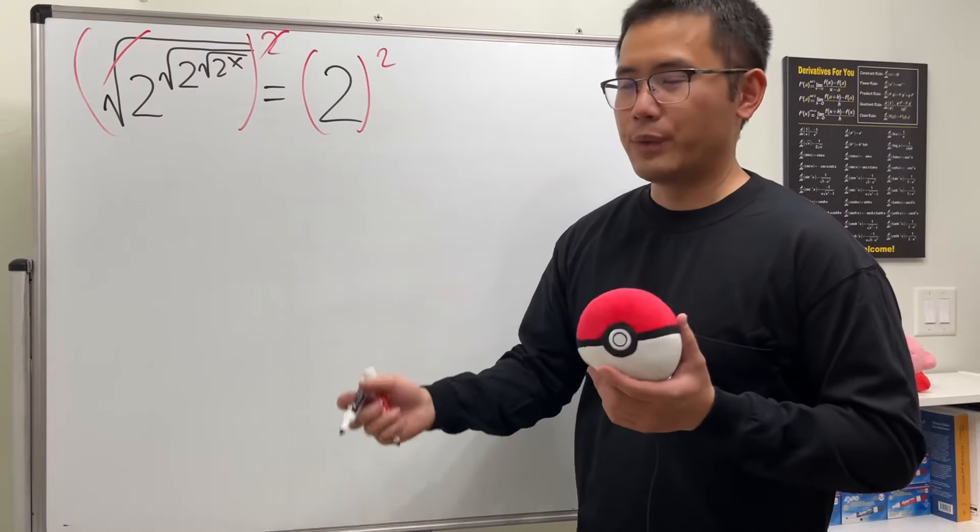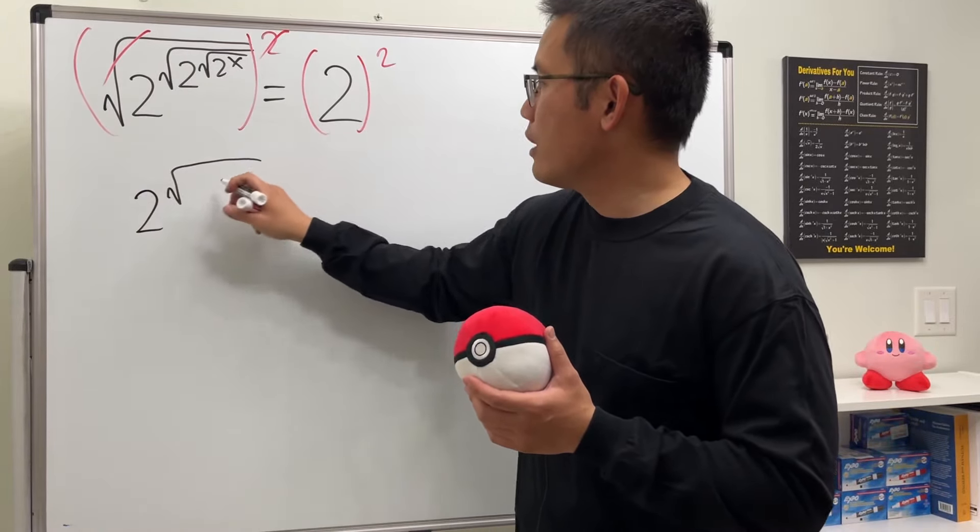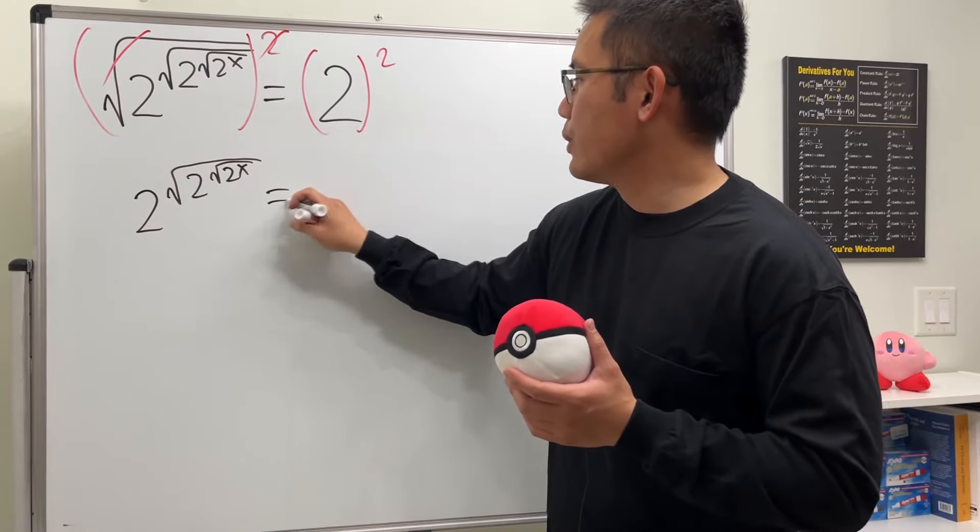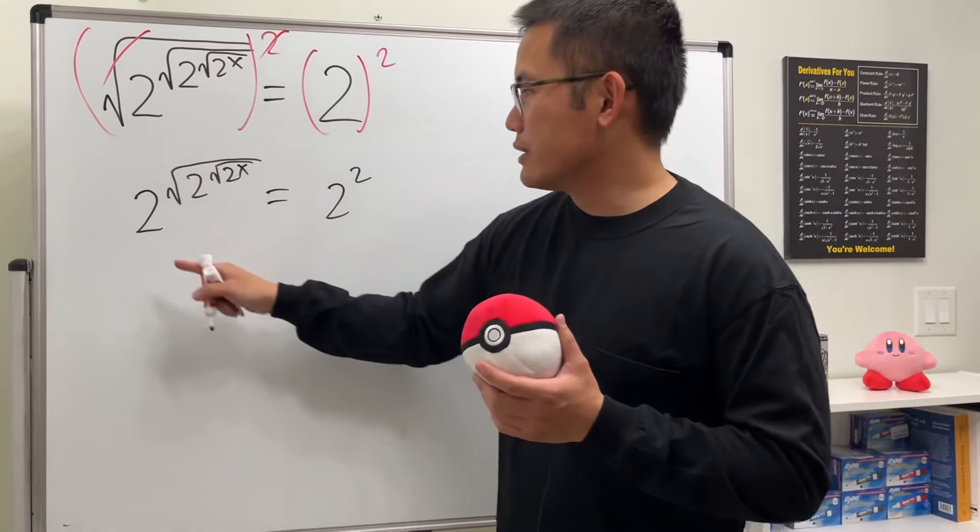Okay so on the left hand side we get 2 to the square root of 2 to the square root of 2 to the x power and that's equal to 2 to the second power. What we are going to do next is we just take log on both sides.